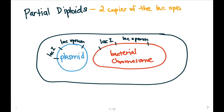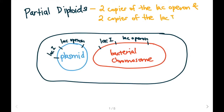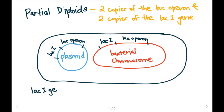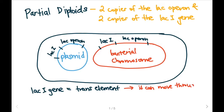A partial diploid is a cell with two copies of the lac operon and two copies of the lacI gene. One key idea to note is that the lacI gene is also known as a trans-acting element. What that means is that a trans element can move through the cytoplasm in order to do its function. So in this case, the lacI gene can move through the cytoplasm of the bacterial cell in order to produce the repressor protein.